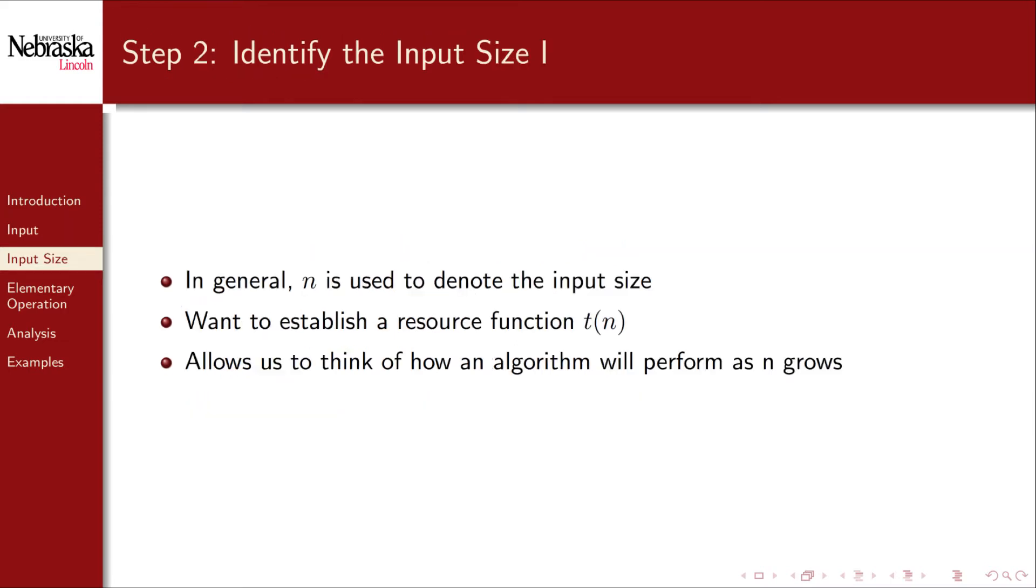The second step also seems easy, but like the first there are several corner cases that you need to understand. In general we want to express the input size as a single variable, usually N. This is because we want to establish some resource function T sub N for time for example. This will eventually allow us to characterize how an algorithm behaves as N grows larger and larger. That is, as we run the algorithm on larger and larger inputs.